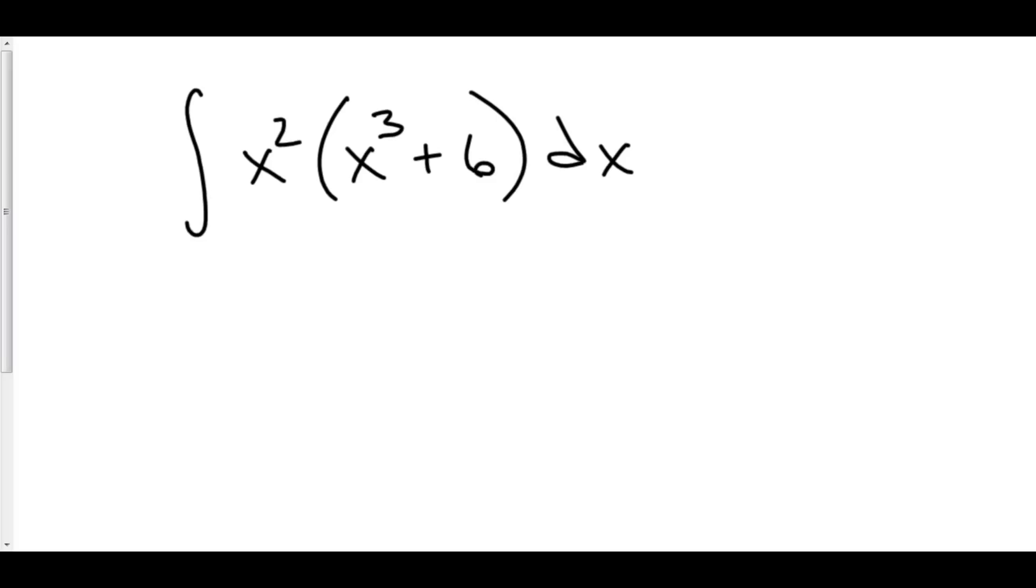Here we have the integral of x squared times x cubed plus 6 dx. Now, we could distribute the x squared to both the x cubed as well as the 6, thereby making this problem much easier. Or, we can try it with u du substitution. Let's do that.